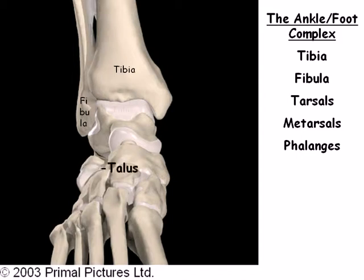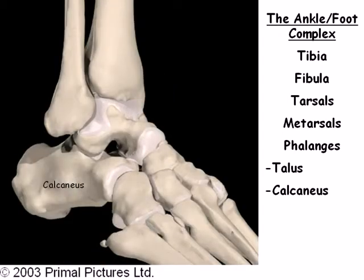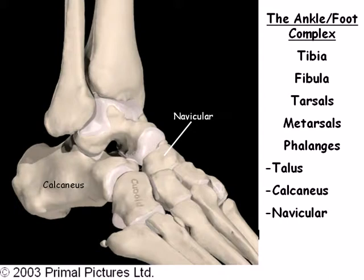The tarsal bones include the talus. The talus articulates inferiorly with the calcaneus, the largest tarsal bone, also known as the heel. The talus articulates anteriorly with the navicular, and the calcaneus articulates anteriorly with the cuboid. The navicular articulates anteriorly with the first, second, and third cuneiform, named medially to laterally.